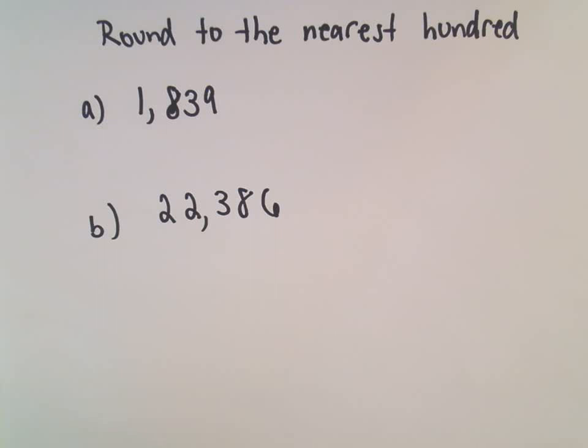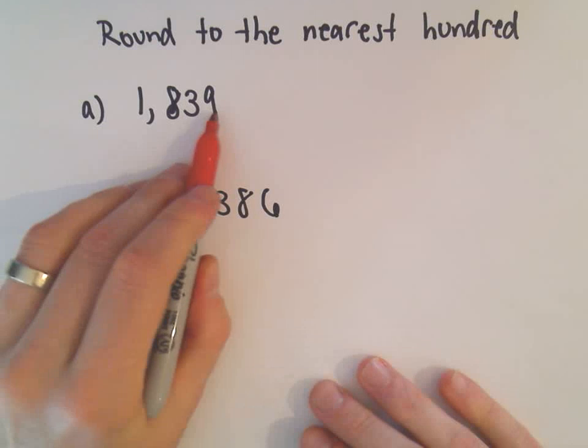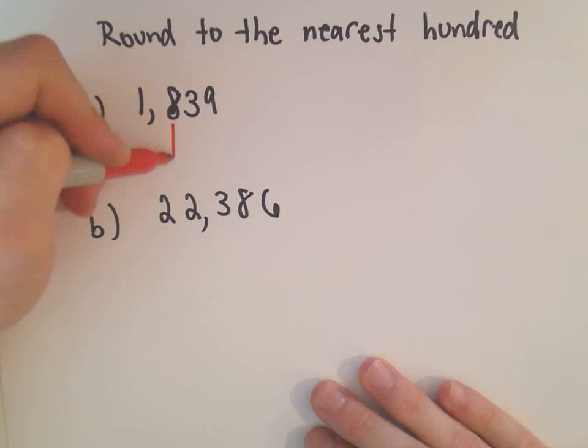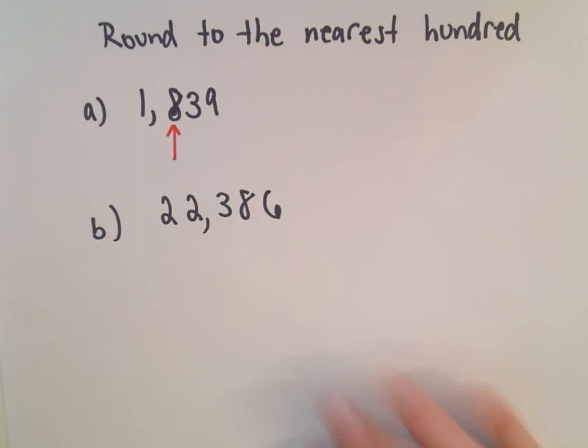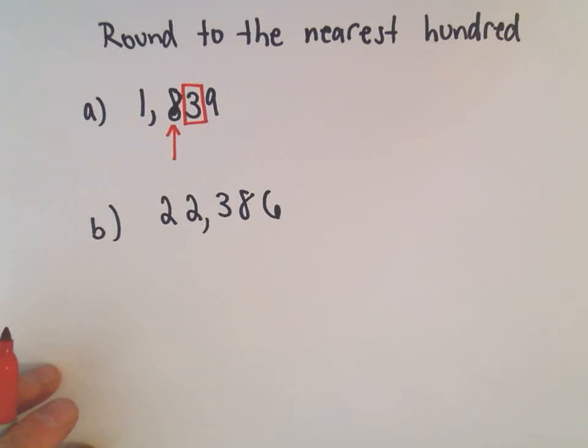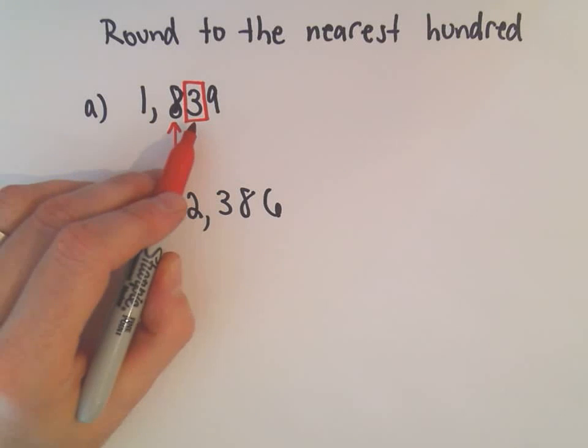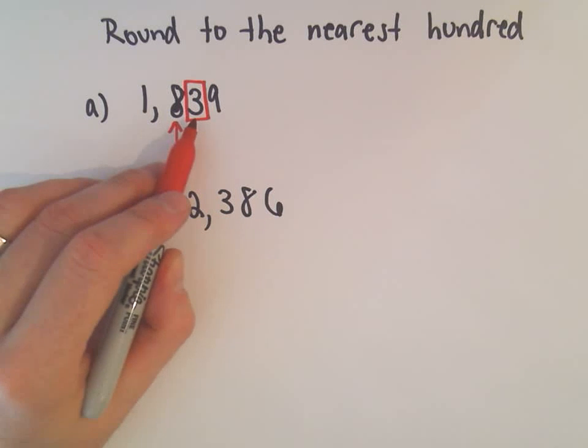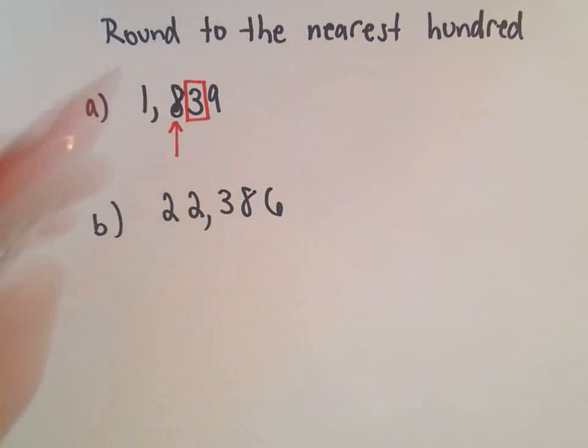Okay, so again what I do is I find the hundreds. Well, the 8 is occupying the hundreds position. And what I do is I look one number to the right. So one number to the right is my 3. Again, since it's 4 or smaller, it says we do not change the 8 at all.